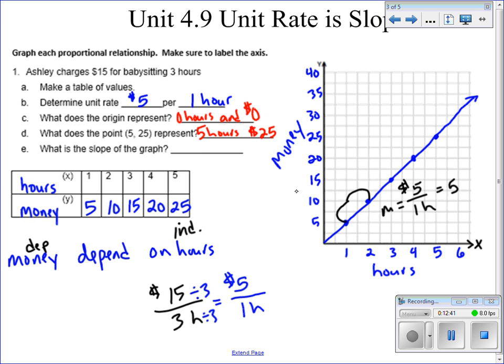And now finally, what is the slope of the graph? The slope of the graph is five, and what that means is we're making $5 per one hour. Our unit rate and slope are the exact same thing.